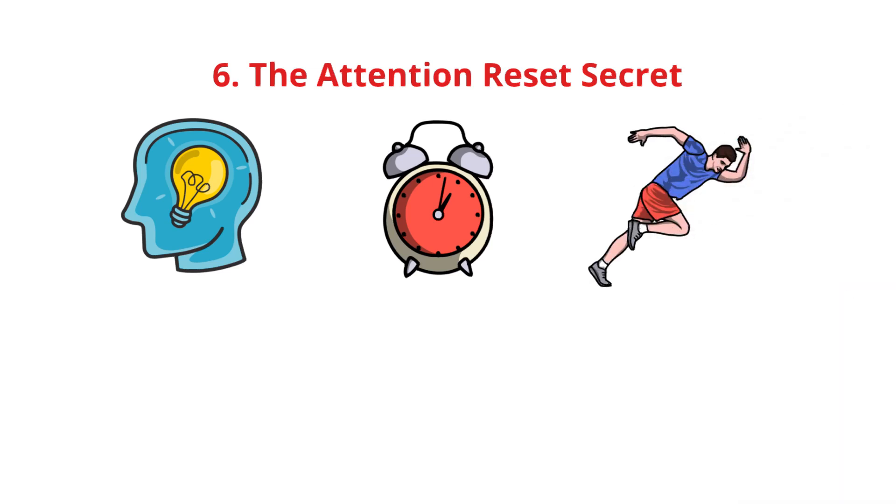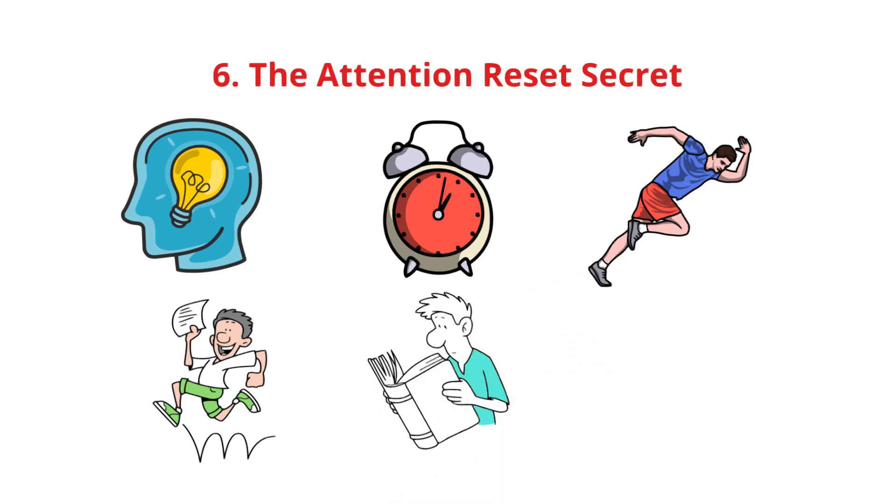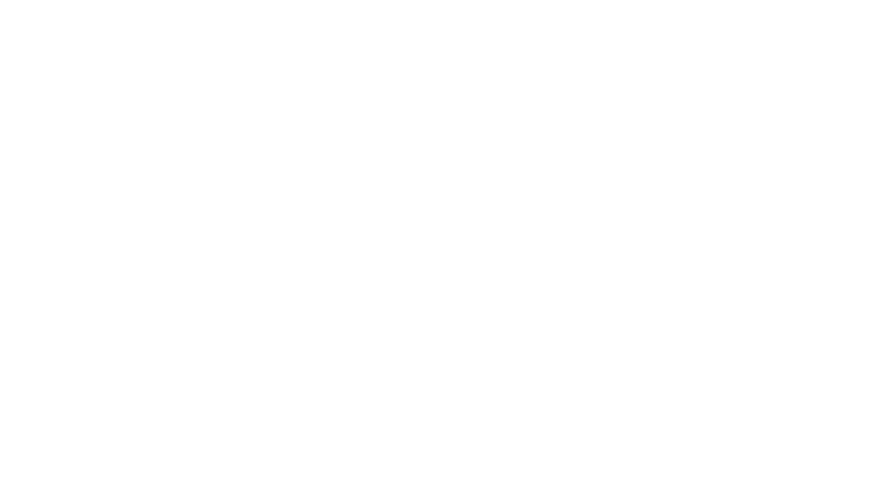Do something completely different. Walk, meditate, or listen to music. Return refreshed with sharper focus. This works because your brain needs downtime to process and store information. Use it, and you'll study longer without feeling exhausted. Now, for the final secret tip, the one top students use to get ahead.